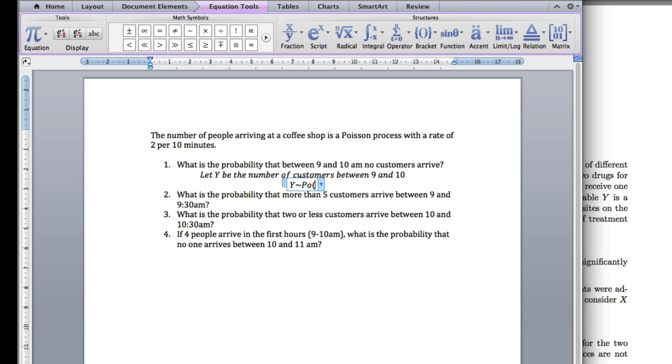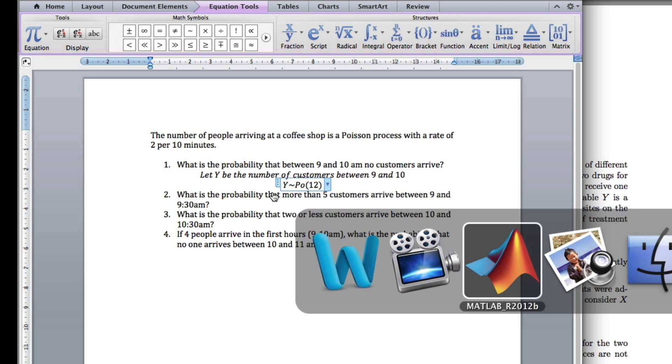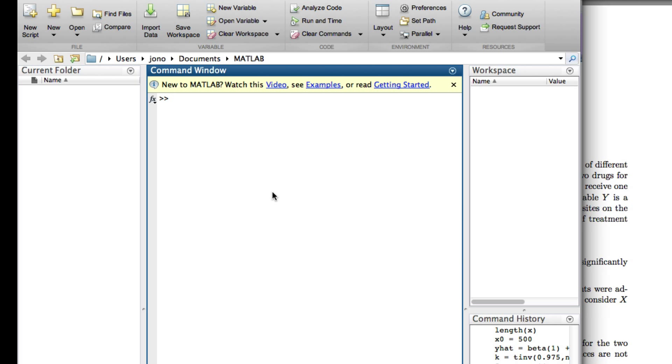To get the rate, we need to think about how many minutes we've got. Between 9 and 10, we've got 60 minutes. We've got 2 per 10, so altogether that must be 12. I worked out 2 divided by 10 gives me lambda per minute, and then times by 60, so that should equal 12. Just in case I can't do mental arithmetic, 2 divided by 10 times by 60, because we've got 60 minutes, is 12.